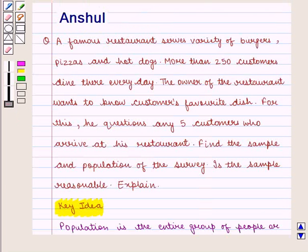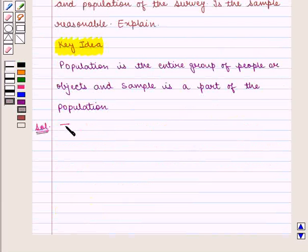In this question, we are given that the owner of the restaurant wants to know customer's favorite dish and for this, he questions any five customers who arrive at his restaurant randomly. So, the population is all the customers of the restaurant.